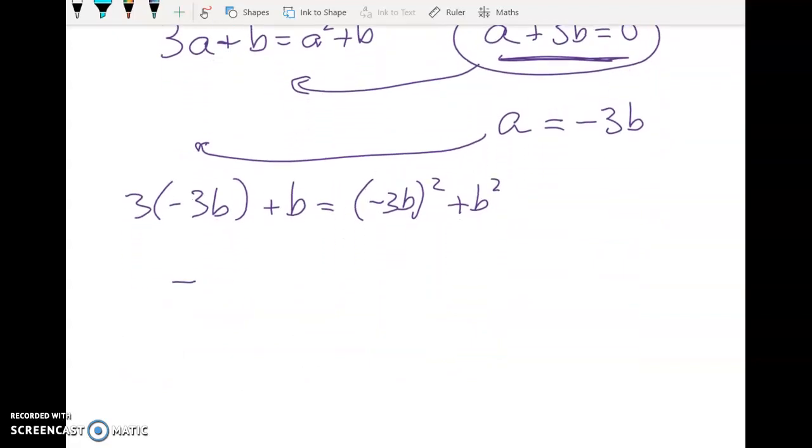On the left hand side I've got negative 9b plus b is equal to 9b squared plus b squared. Negative 8b is equal to 10b squared. What does that give us now?